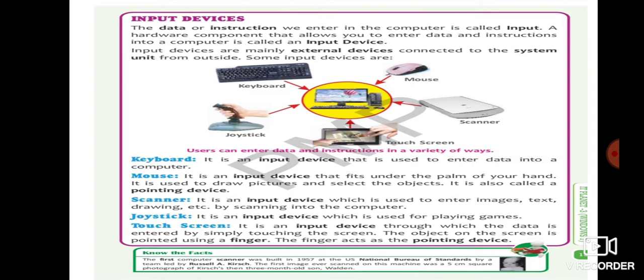So in the monitor mouse used to act as pointing device. In the touch screen our fingers used to act as pointing device. So here you can see the know the fact. There you can see who have invented the scanners. Scanner was invented by Russell Kirsch at US National Bureau of Standards in 1957. And first he took the scanning of 5 cm photograph which is of his 3 month old son Walden.